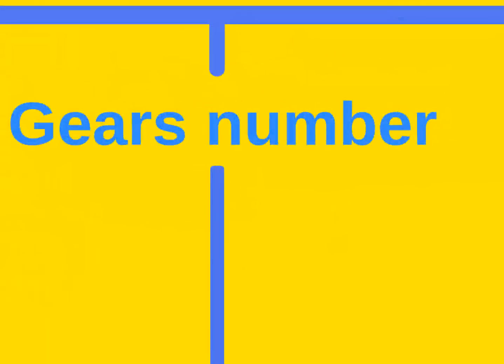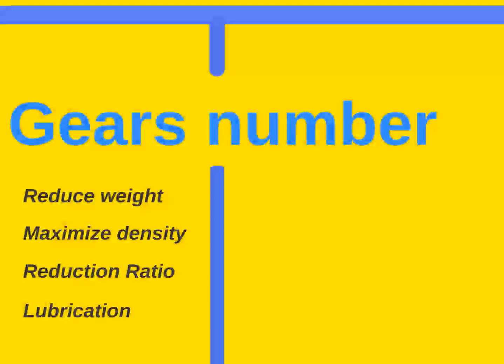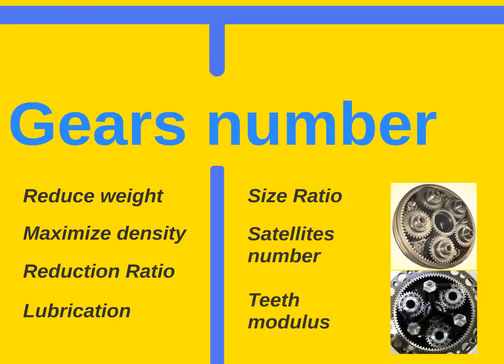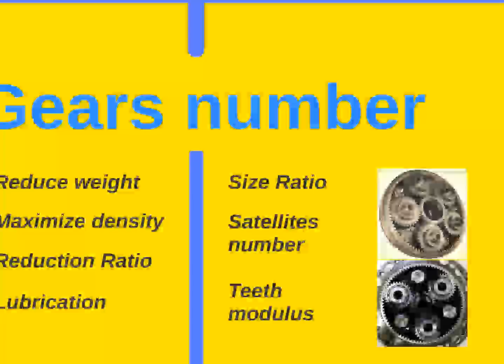Second step, gear numbers and size ratio. Targets are quite the same, but we will have to think about having enough room left to fit the lubrication system. To get those targets, an algebraic calculation has to be performed in order to find the best size ratio, satellite number, and teeth modulus.